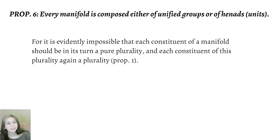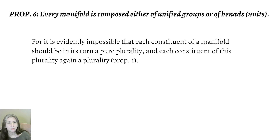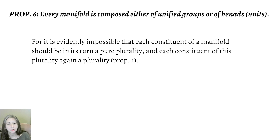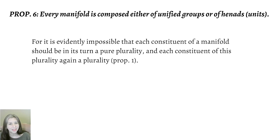His explanation starts like this: it is evidently impossible that each constituent of a manifold should be in its turn a pure plurality, and each constituent of this plurality again a plurality. What he's saying is that for any manifold or manyness, the parts of it cannot be pure pluralities, because if they were, then those parts in turn would be pluralities and so on forever. You can't have plurality forever — that's the idea of the infinity of infinites from Proposition 1, which was discarded as impossible.